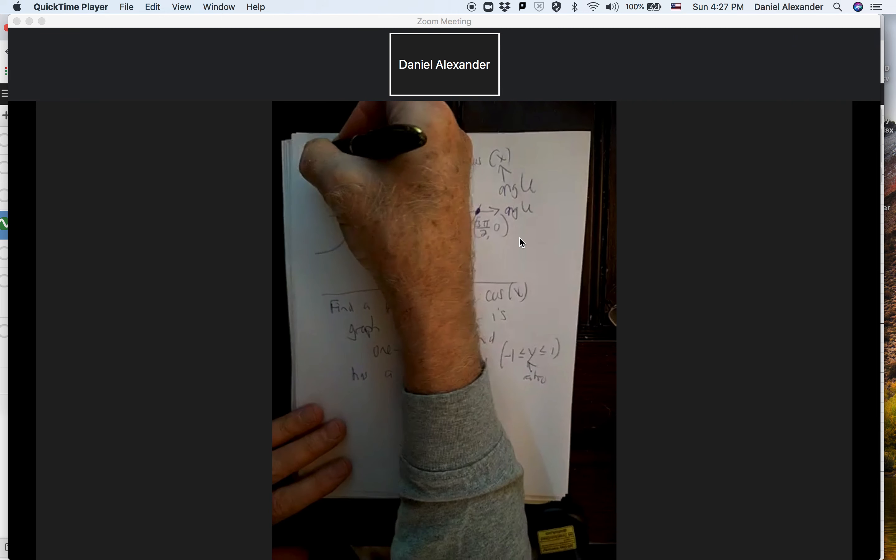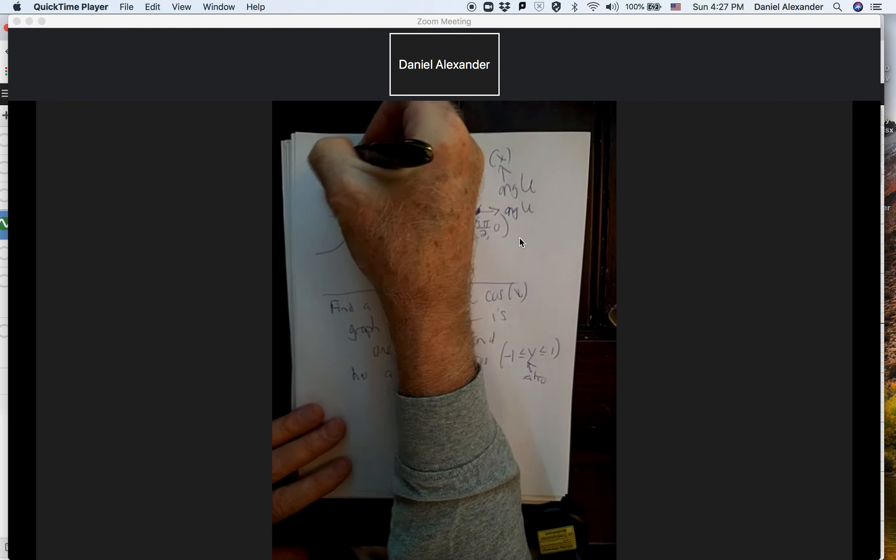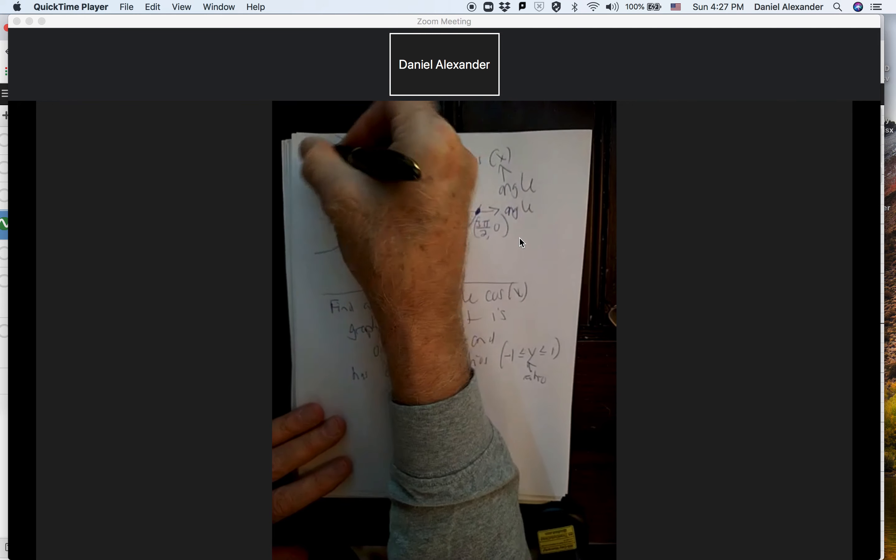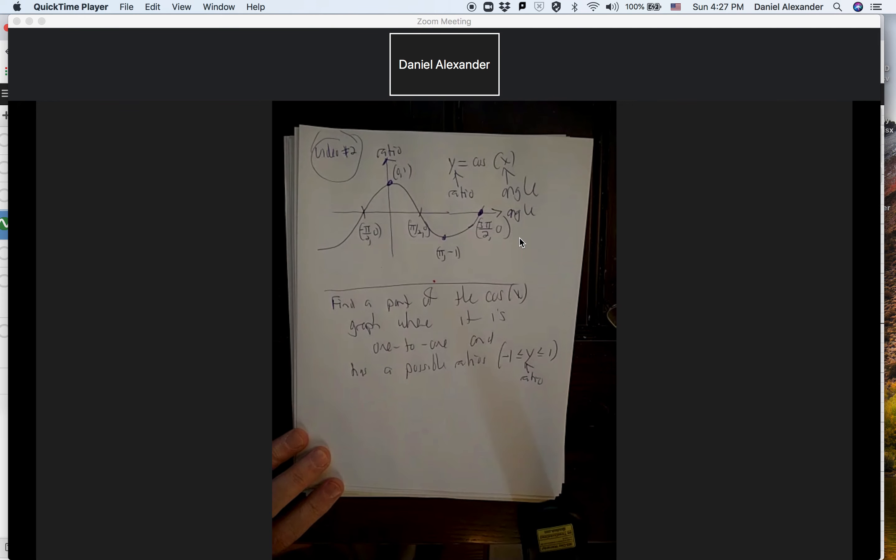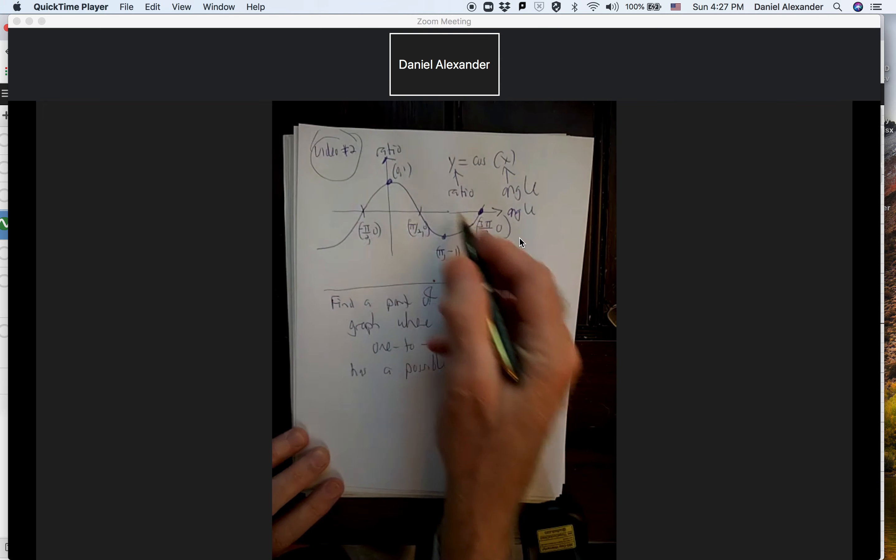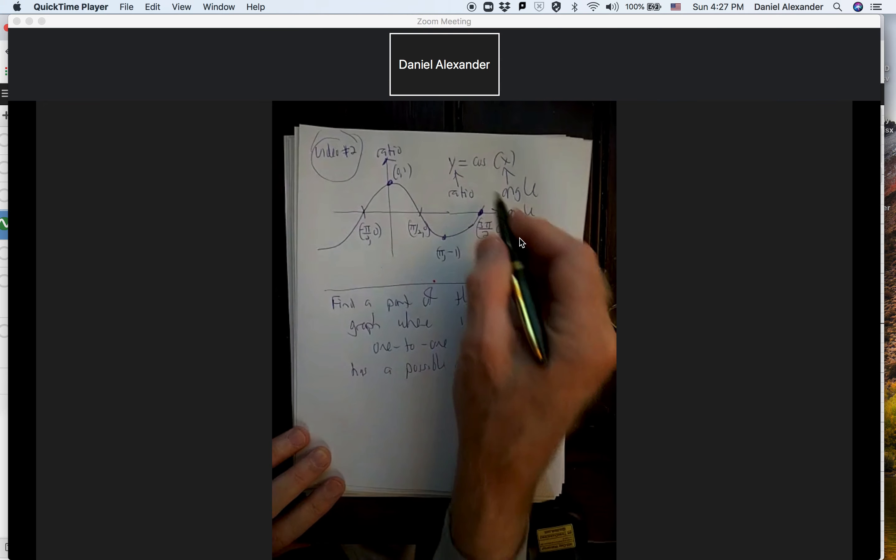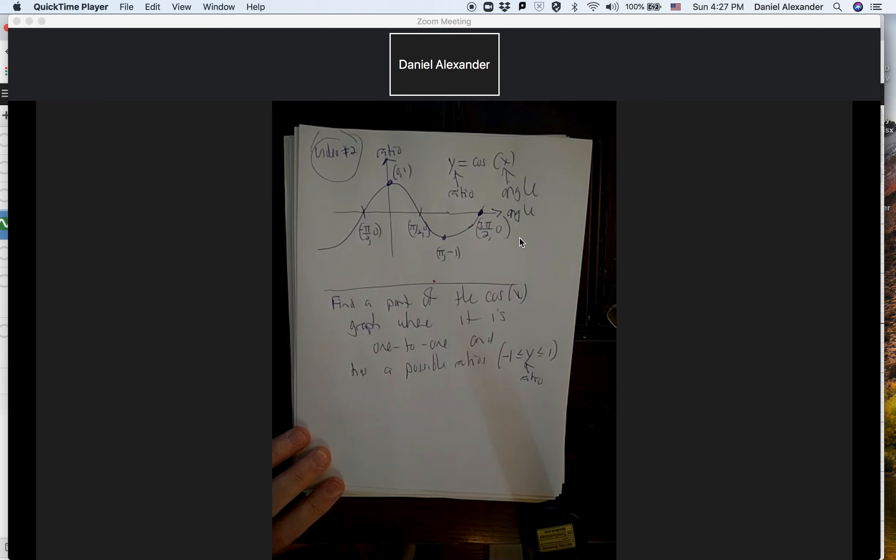Here's the second video, video number two, and it's going to be about the cosine. I'll do something similar with the tangent just so you can look to see which one. So here's the cosine graph. Again, we plug in an angle, we get back our cosine ratio.